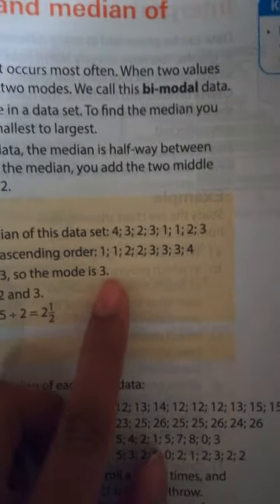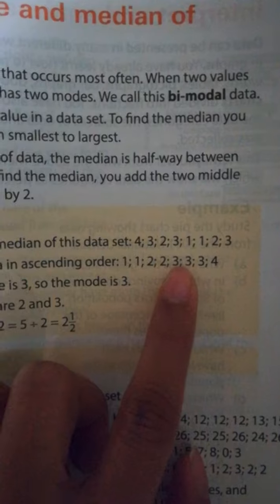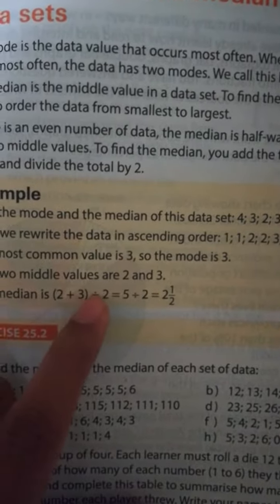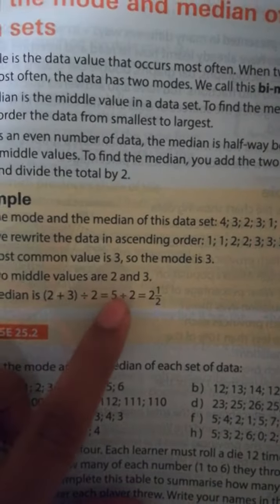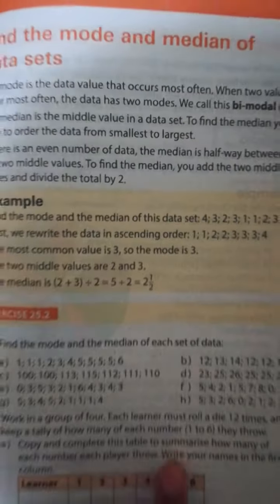Therefore we do not have a number that is exactly in the middle. So we will take two and three to calculate our median. So we say two plus three and you divide it by two. You will always divide it by two. And in this case you get two and a half. So our median is two and a half.